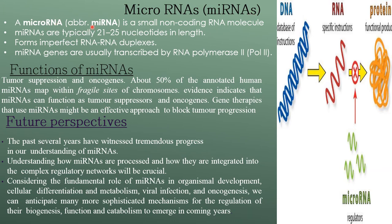MicroRNA, or miRNA, is a small non-coding RNA molecule. miRNAs are typically 21 to 25 nucleotides in length and form imperfect RNA-RNA duplexes. miRNA genes are usually transcribed by RNA polymerase II. The functions of miRNAs include tumor suppression and oncogenesis, and they are used for gene silencing. About 50% of annotated human miRNAs map within the fragile sites of chromosomes.